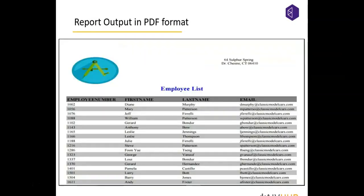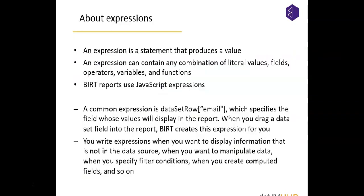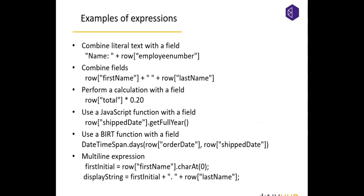Expressions are statements that produce a value. Based on an expression you can create certain conditions. They can contain various operators, values, fields, functions, and variables. By default, BIRT uses JavaScript expressions. Here is a sample list of expressions — the first combines literal text with a field, where one part is static text and the other, like employee number, is fetched from the data.